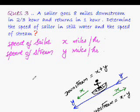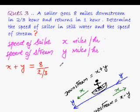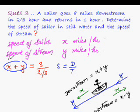So, using this information, now we can easily create the two equations. One for the downstream and the other one for the upstream. So, that means x plus y is equal to 8 divided by 2 by 3. Isn't it? As we all know, speed equal to distance divided by time. So, this is the speed, this is the distance and this is the time. Using this relationship, we have created our first equation.